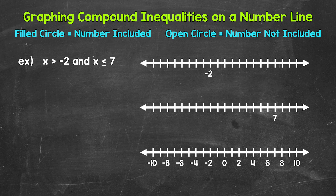So we have two inequalities combined by AND. Here x has to be greater than negative 2 AND less than or equal to 7. A solution of a compound inequality involving AND must make both inequalities true — must satisfy both. Now something to mention about compound inequalities involving AND: they can be written without the word AND in the middle.